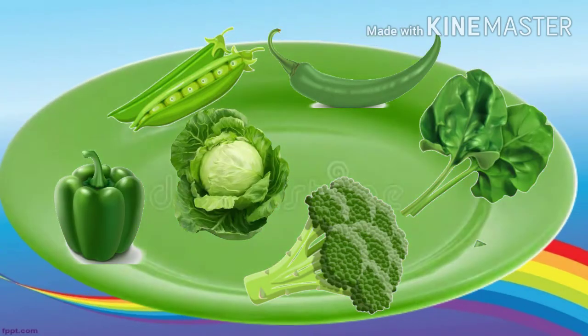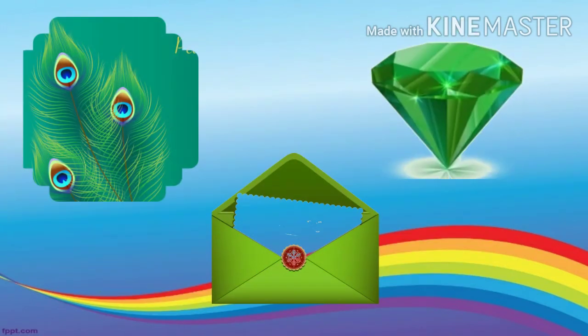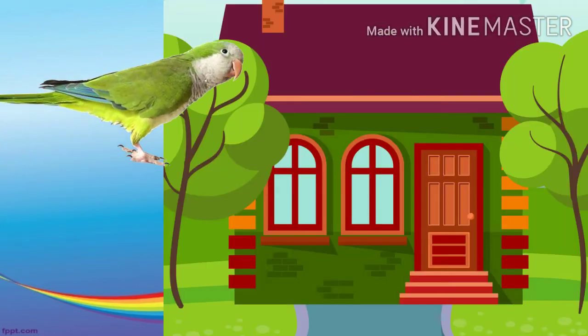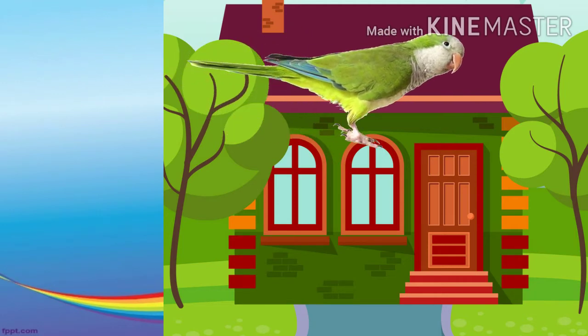This green plate has many vegetables: green peas, green chili, green spinach, green broccoli, cabbage, and capsicum. Also peacock feathers, envelopes, and emerald stone are green. Green pen, green board, and green mittens or gloves. Green parrot.